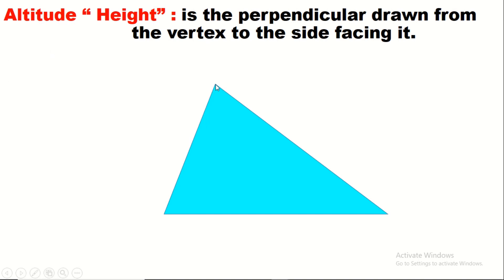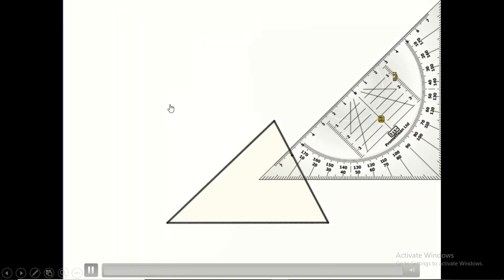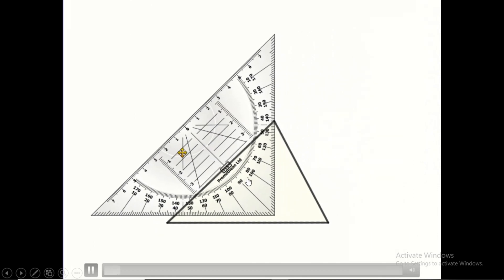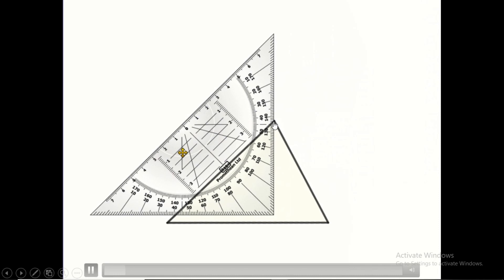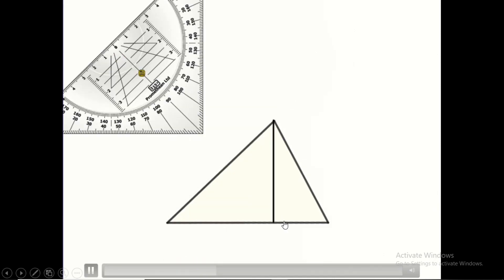Let's see how to construct the altitude in an acute triangle. An acute triangle has all its angles as acute angles, less than 90 degrees. We put the set square exactly passing through the vertex; from the other side it should be aligned with the line facing this vertex. We move the set square so it is aligned, and then we can draw our first height.